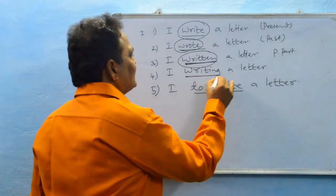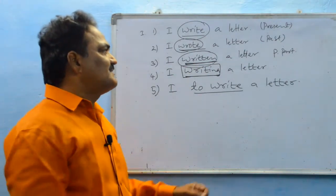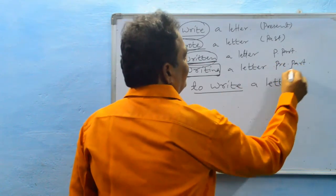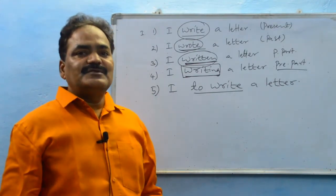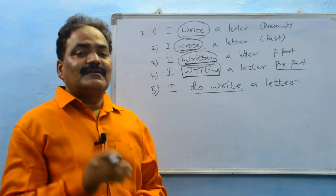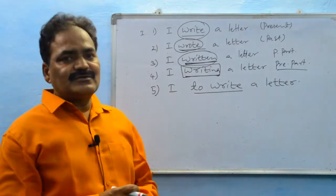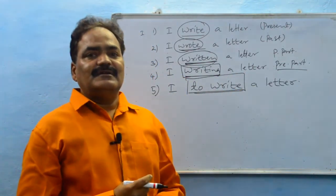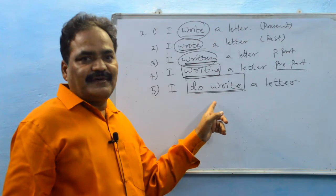Going to the fourth example, we find 'writing' — the present participle verb. 'I writing a letter' is somewhat obscure, somewhat incomplete. And the fifth one also: the verb 'to write' — 'I to write a letter' — is a non-finite verb usage. It does not make complete, independent meaning.